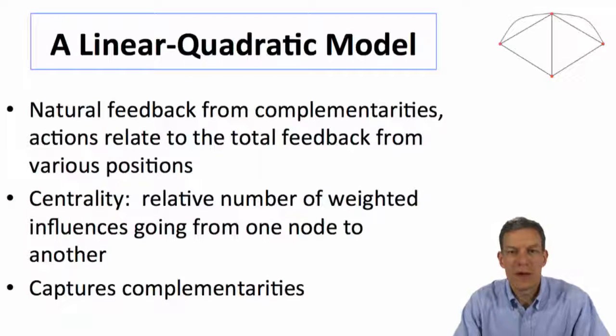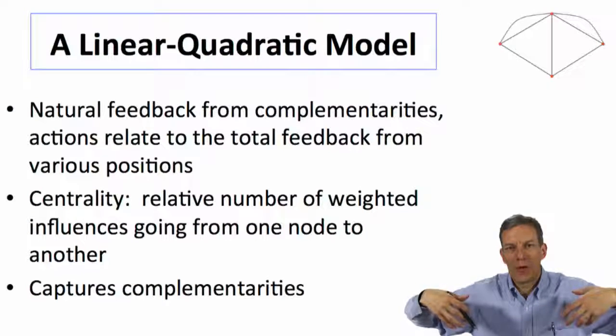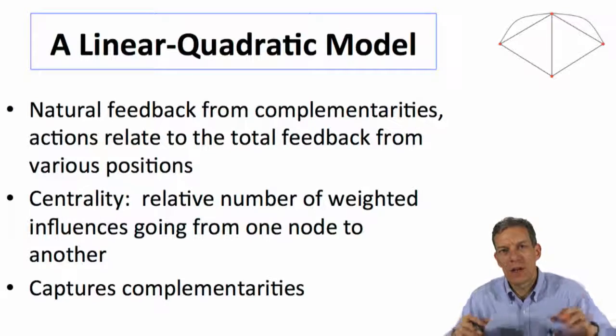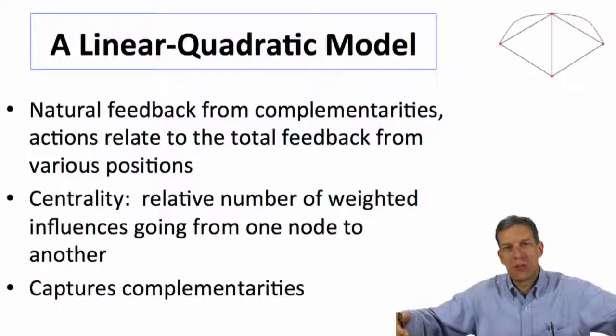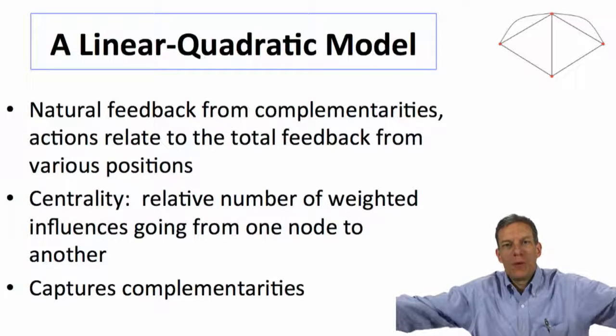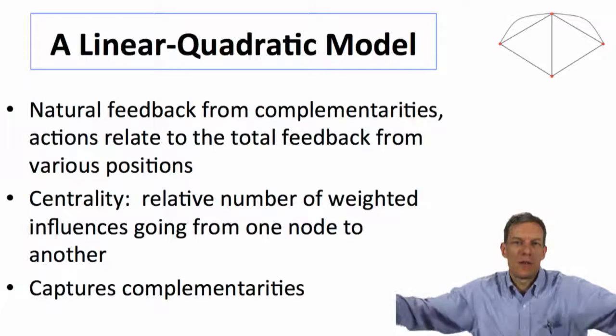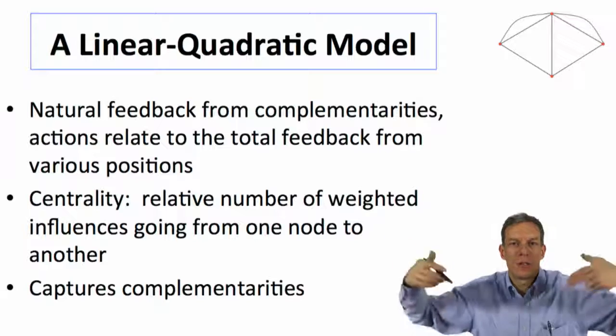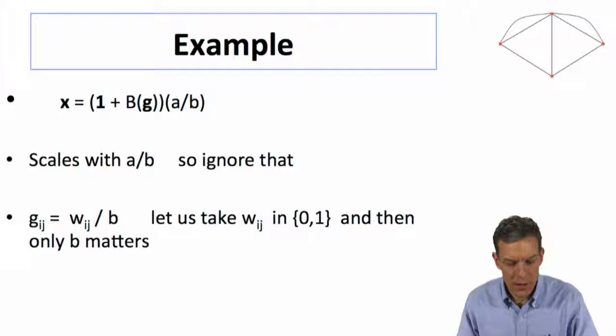So we get a natural feedback in complementarities. The actions relate to the total feedback. Centrality tells us relative number of weighted influences from one node to another. That captures the complementarities. And why is that working? So again, these things we're measuring sort of how much do I get influence from other people, from their friends and so forth. That's exactly what's happening here. How much does their action influence my friend's actions, which then influences my action. And what do the feedbacks look like?